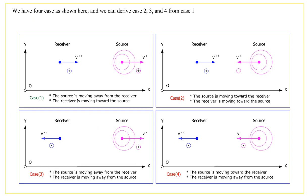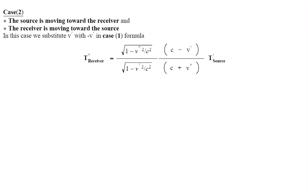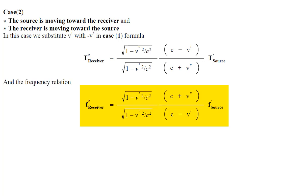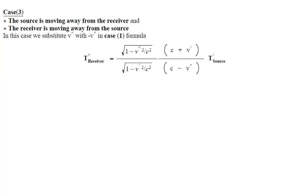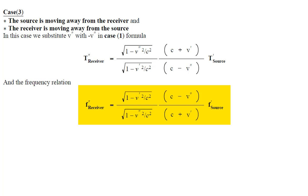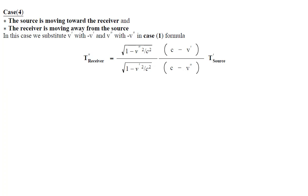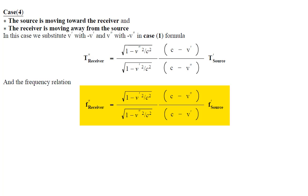We have four cases. Case 2: the source is moving toward the receiver and the receiver is moving toward the source. In this case, we substitute V' with negative V' in the case 1 formula, and the frequency relation takes the form. Case 3: the source is moving away from the receiver and the receiver is moving away from the source. In this case, we substitute V'' with negative V'' in the case 1 formula, and the frequency relation takes the form. Case 4: the source is moving toward the receiver and the receiver is moving away from the source. In this case, we substitute V' with negative V' and V'' with negative V'' in the case 1 formula, and the frequency relation becomes.